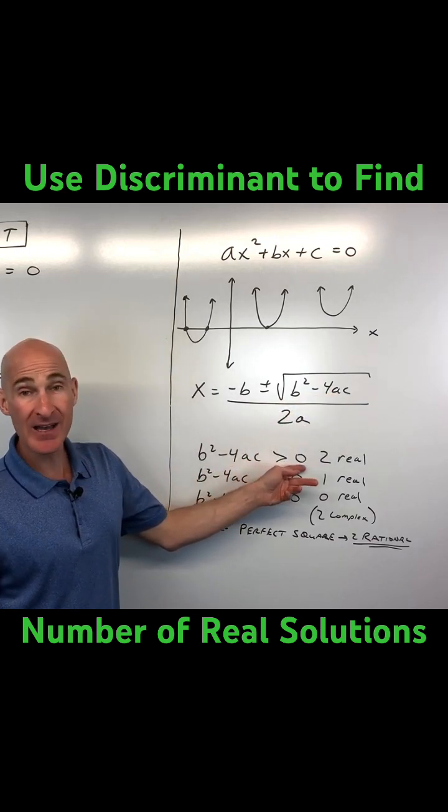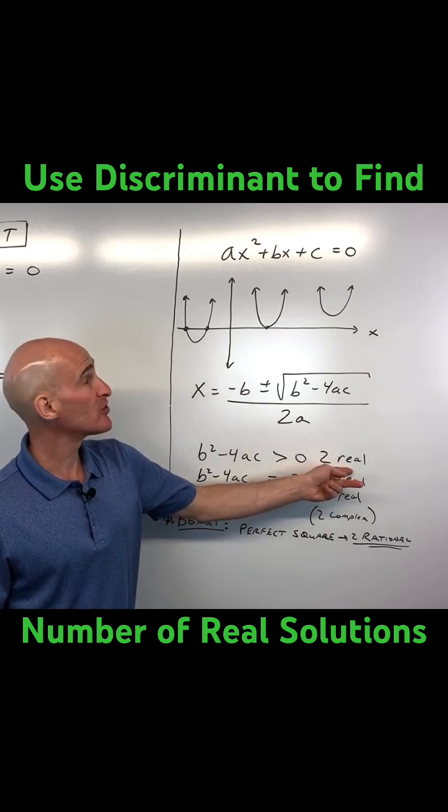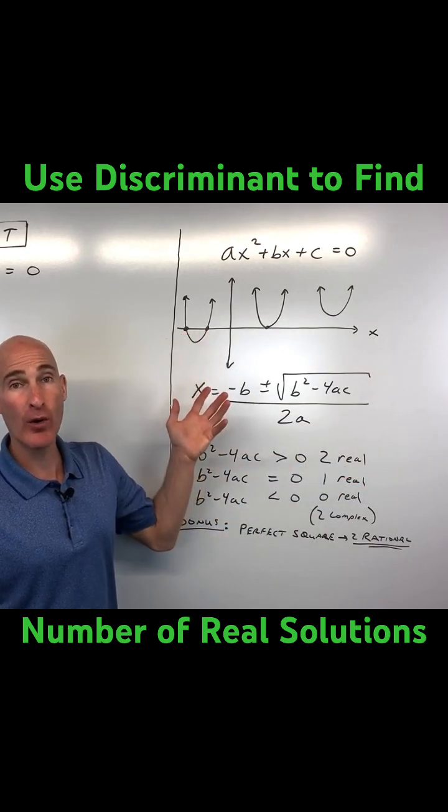If it comes out to a positive number, meaning it's greater than zero, then there are two real solutions, meaning it crosses the x-axis at two points.